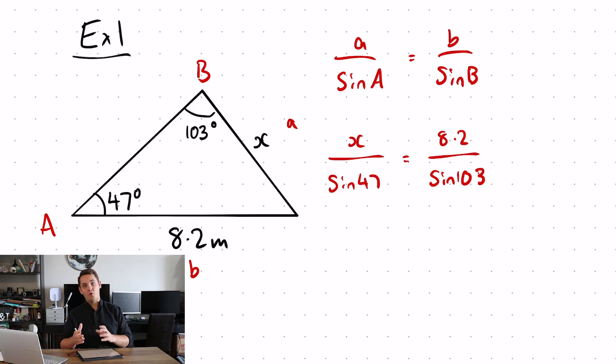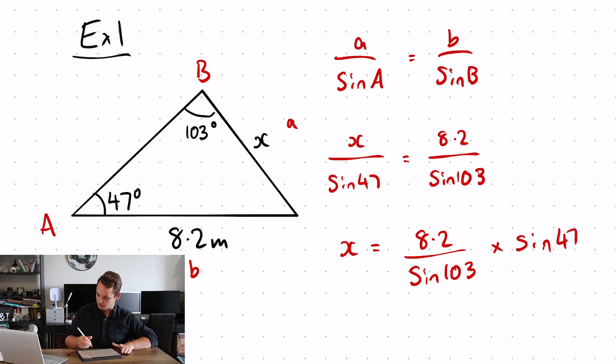Now I have it in my formula, it's a case of rearranging this formula to get x by itself so I can solve it. So because x is divided by sine 47, I need to get rid of that dividing by sine 47 by doing the opposite, which is multiplying by sine 47. So x is equal to 8.2 over sine 103 multiplied by sine 47, which gives you an answer of 6.15 meters.